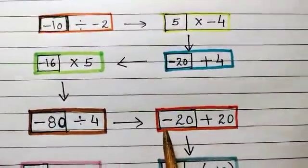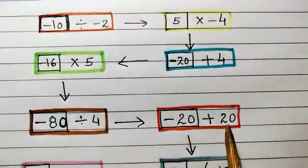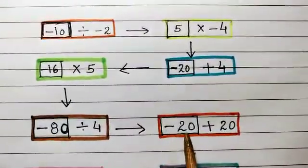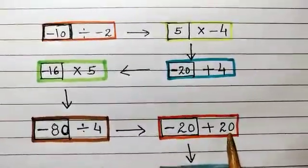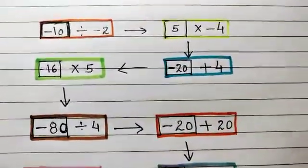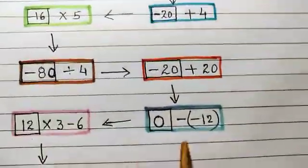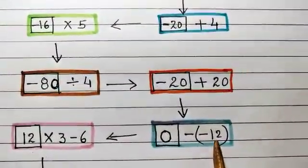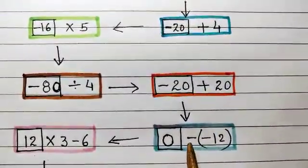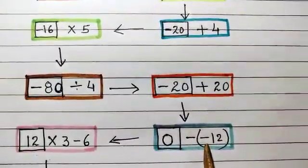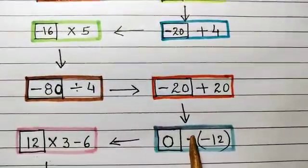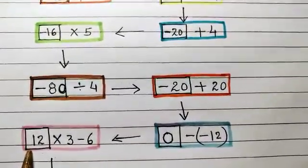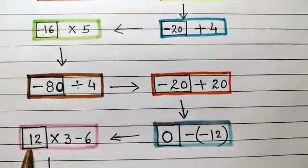Now, here a negative integer is added to a positive integer and both are the same magnitude: negative 20 plus 20. 20 minus 20 is 0. Now, here 0 is subtracted from a negative integer, that is, negative into negative will become positive. So, 0 plus 12 will become positive 12.